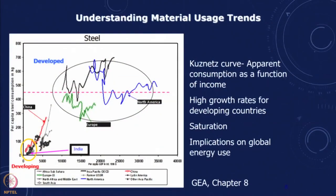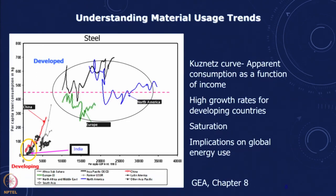If you look at steel across different countries — North America, Europe, China, India — you can see that consumption corresponds to a stagnation level of around 450 kg per person per year. So it is apparent consumption as a function of income: high growth rates for developing countries, going to saturation, with implications on global energy use.